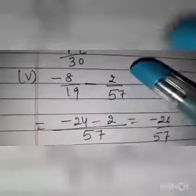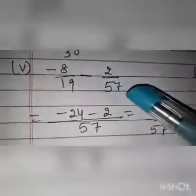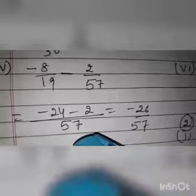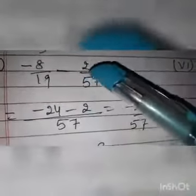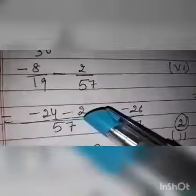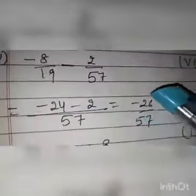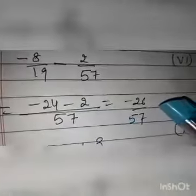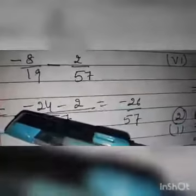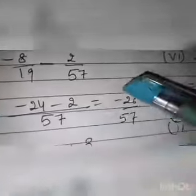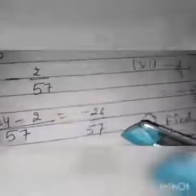Fifth part is minus 8 by 19 minus 2 by 57. LCM of 19 and 57 is 57. In 19's table, 57 comes at 3; multiply 8 by 3 to get minus 24. In 57's table, 57 comes at 1; multiply 2 by 1 to get 2, so minus 2. When both numbers have the same sign, we add: 24 plus 2 is 26. The sign from the bigger statement is minus, so the answer is minus 26 by 57.